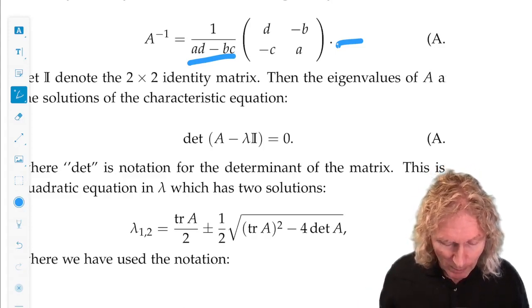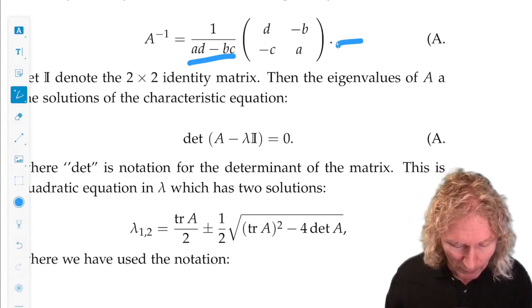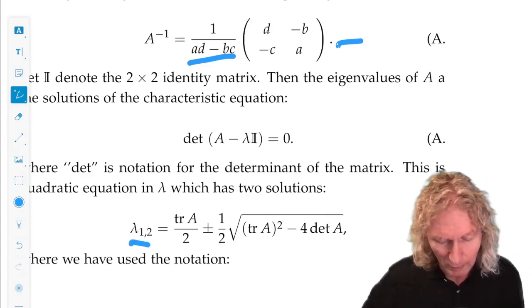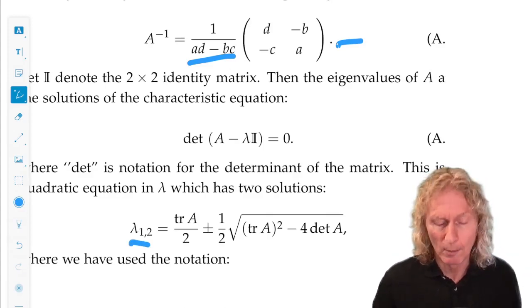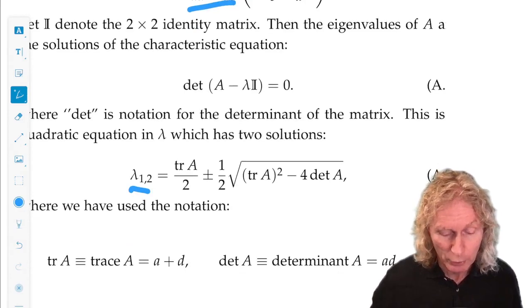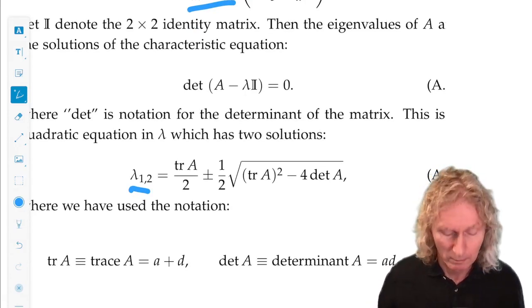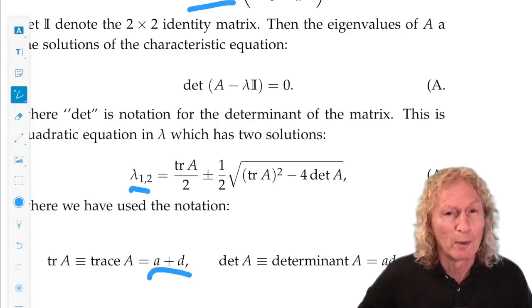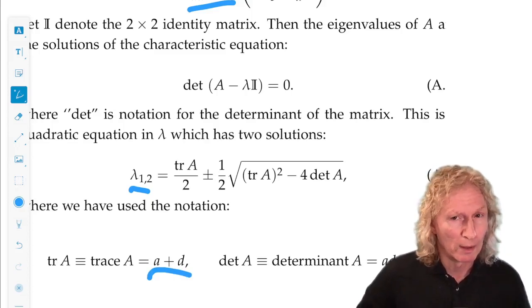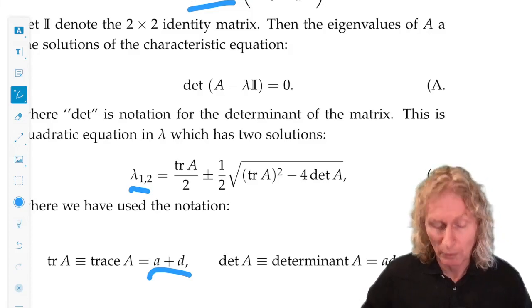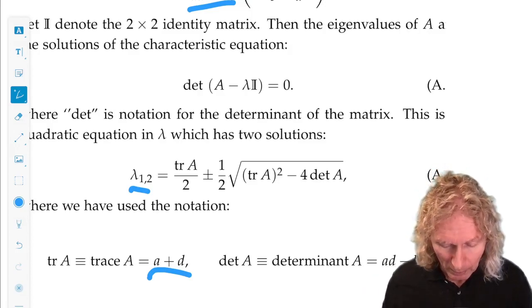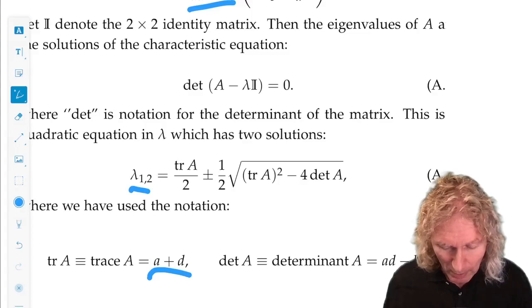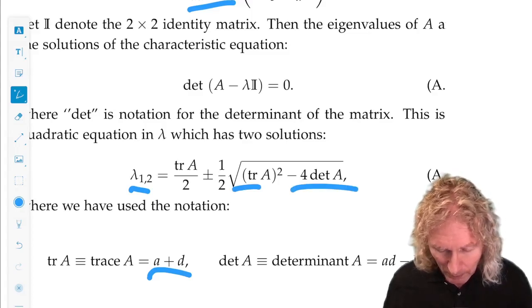But the nice thing about that, you can verify this directly, that the two eigenvalues have the form of the trace, which is the sum of the diagonal elements, trace of the matrix divided by two, plus or minus, the two eigenvalues, one half times the square root of the quantity, trace squared minus four times the determinant.